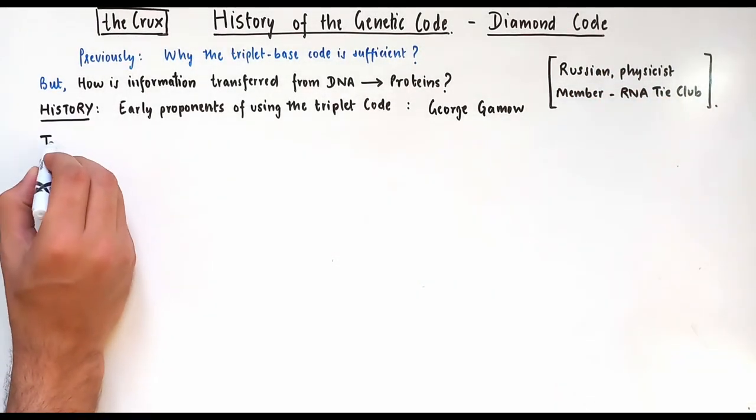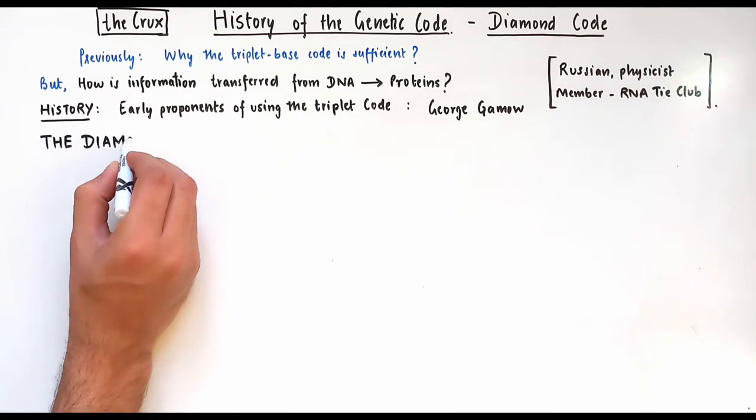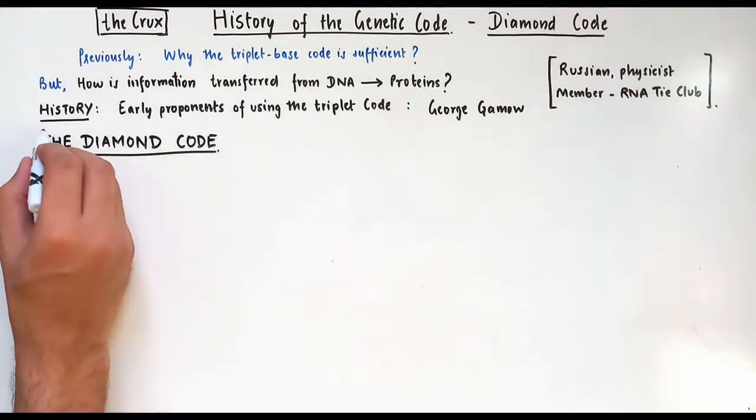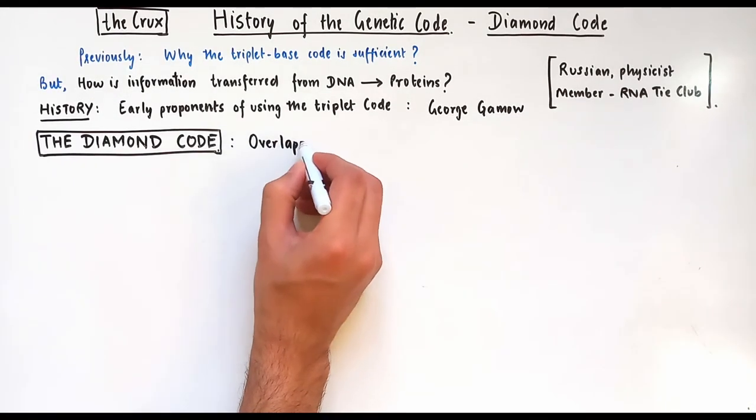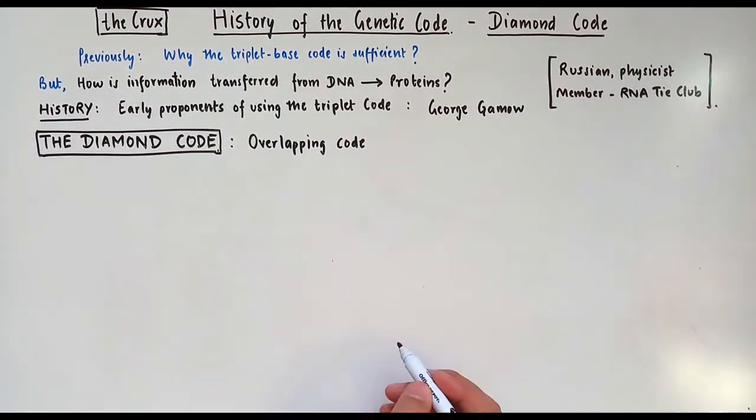Soon after the discovery of the structure of the DNA, George Gamow postulated the diamond code, which is an overlapping code to explain the transfer of information from the DNA to the protein.